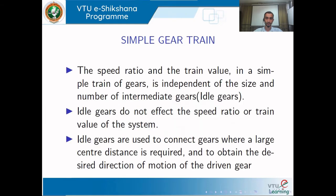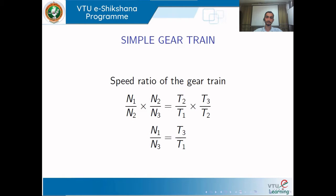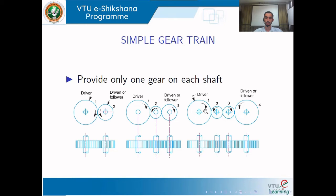Writing equations for a third gear arrangement similarly: N1 by N2 equals T2 by T1, and N1 by N3 equals T3 by T1. In neither case does the intermediate gear appear in the final speed ratio or velocity ratio. Therefore, the speed ratio or velocity ratio for a simple gear train is independent of the intermediate gears — you can have any number of intermediate gears and it does not affect the speed ratio.